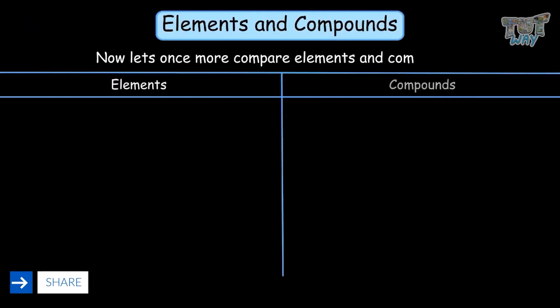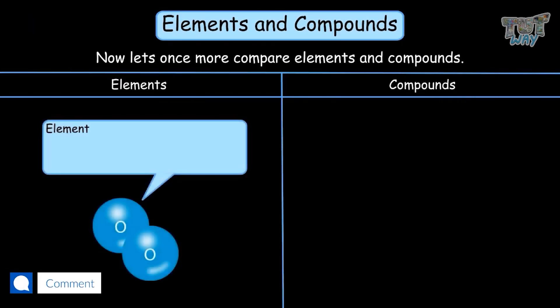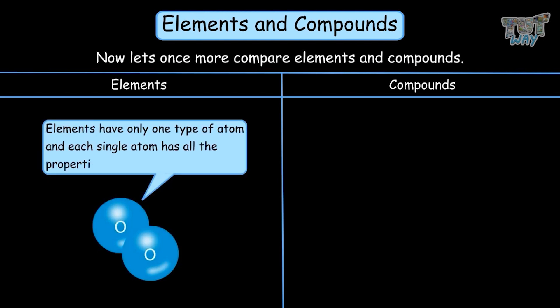Now let's compare elements and compounds. Elements only have one type of atom and each single atom has all the properties of that element.